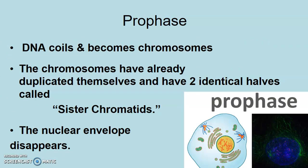So we're going to start off with prophase. 'Pro' means beginning — the prologue of a story is the beginning — and prophase is the beginning of this process. During prophase, there's a handful of things that happen. First of all, we've got to get to that DNA, which is in the nucleus. So the first thing that has to happen is the DNA begins to consolidate into chromosomes. So the nuclear membrane starts to break down — it starts to dissolve.